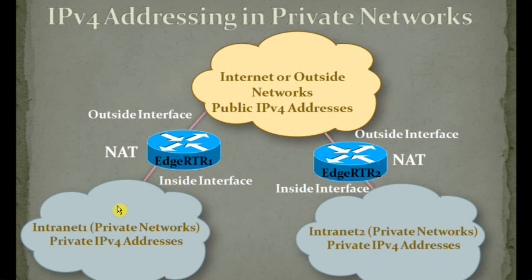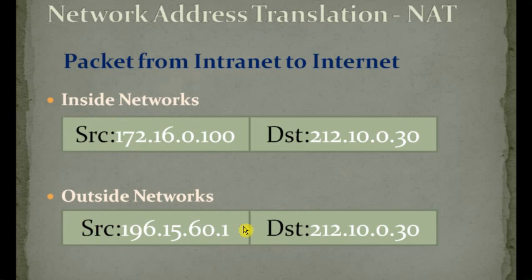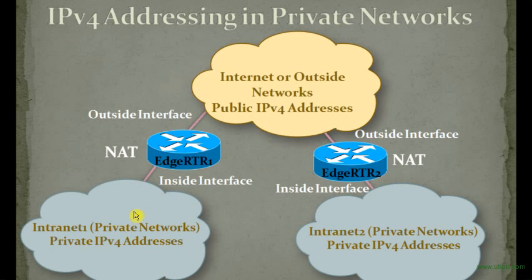Consider an example with two intranets: Intranet 1 belonging to organization A, and Intranet 2 belonging to organization B. Both are private networks using private IPv4 addresses, and they likely use the same range of addresses since private addresses are reusable in different locations. However, if intranet 1 users want to communicate with the internet, they cannot do so with a private IP address. If both intranets communicated with the internet using private IPv4 addresses, it would create IP conflicts — and since private addresses are used in hundreds of thousands of locations, it would create a big problem.